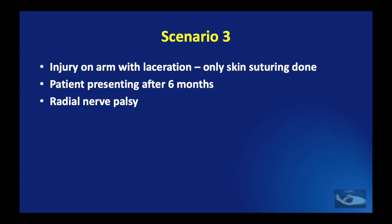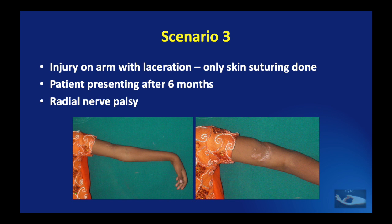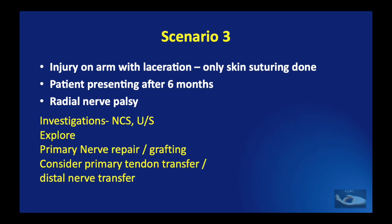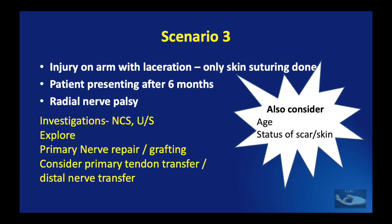The next scenario: a patient with an injury on the arm with a laceration where only skin suturing had been done elsewhere, and the patient is presenting after a period of time — for instance, after 6 months — as in the case of a young girl who sustained an injury in a road traffic accident and has had radial nerve palsy for 6 months. In this situation, it is important to investigate with nerve conduction studies and ultrasound to find out the status of the injured nerve. The next step would be to explore and do either primary repair or grafting according to the findings. Since it is 6 months following injury, primary tendon transfer or distal nerve transfers should also be considered. We also need to consider the age, and the status of the scar — if indurated, ultrasound scar massage will make it softer and more supple.